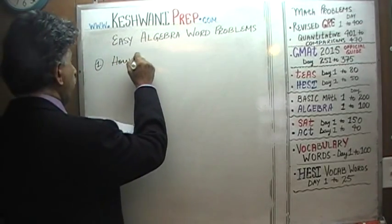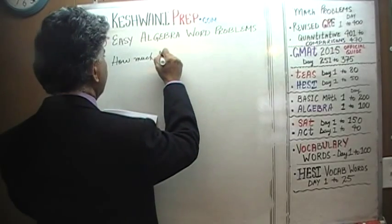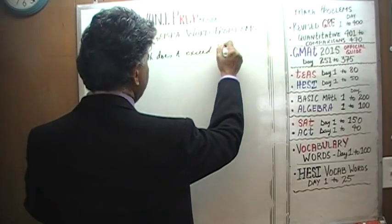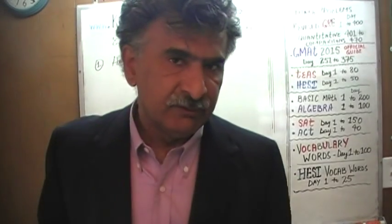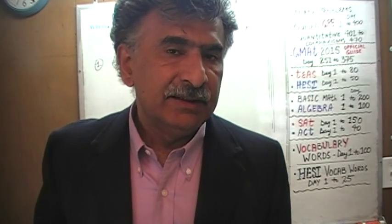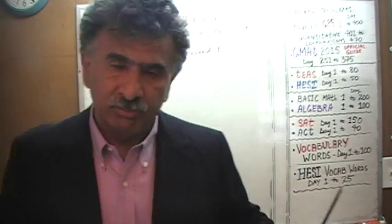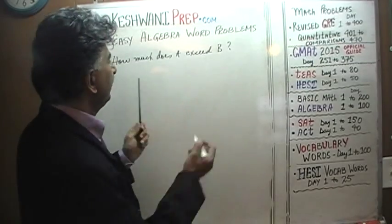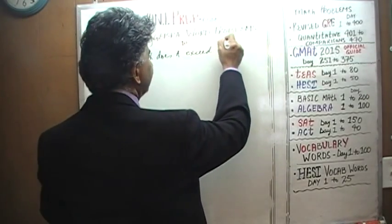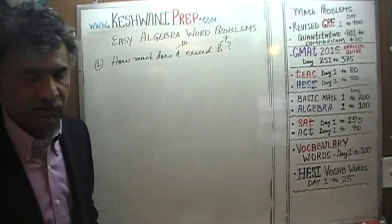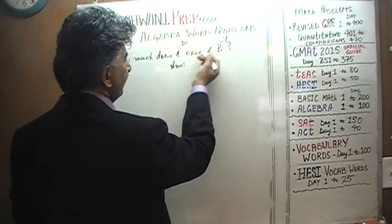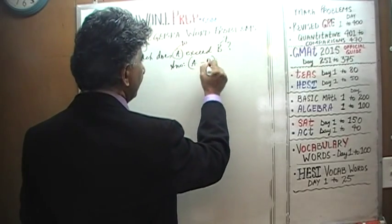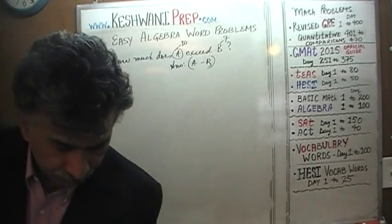First question: How much does A exceed B? A and B are variables — unknown quantities. The simplest, easiest, most straightforward thing to do is to plug in some numbers. How much does 10 exceed 7? The answer is 3 — 10 minus 7. So the answer to this problem is A minus B. That's all. Very simple.